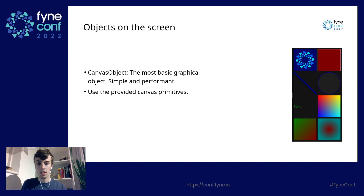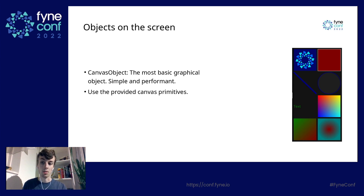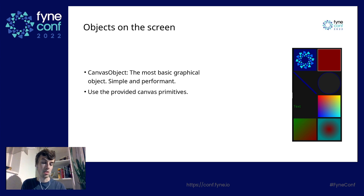So, if we want to show something on the screen, we can use a canvas object. These are the most basic graphical objects available within Fyne. They are simple and performant. We have eight provided canvas primitives: the image, the rectangle, the line, the circle, the text, the raster, the linear gradient, and also a radial gradient.